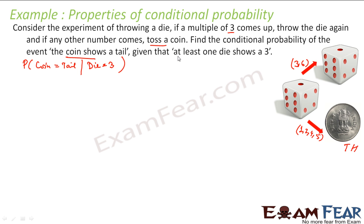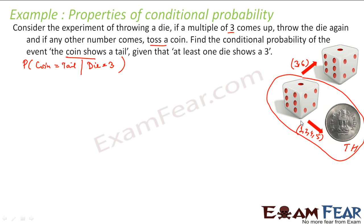If you notice this carefully: if you want to get a tail or a head, you have to be in the coin-toss branch, which means the die should have shown 1, 2, 4, or 5. If that happened, the condition 'at least one die shows 3' is not satisfied. So if I am getting tail, that means the die was not 3 — both conditions cannot match simultaneously. I will get 0 as the probability.